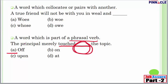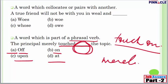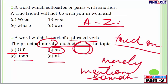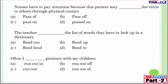'The principal merely touched ___ the topic' — options: 'off,' 'on,' 'upon,' 'at.' 'Touch on' means to merely mention something, and since we have the word 'merely' in the sentence, 'on' is the right answer. Pinnacle has made a complete series on phrasal verbs from A to Z, alphabetically, in both Hindi and English medium. Going through them will make a huge difference in your comfort with cloze tests.